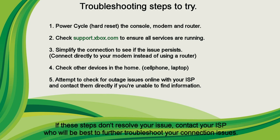Fourth, check other devices in the house — whether it be a cell phone, laptop, or other handheld device. If you're seeing a common issue with download speeds across all devices, you know there might be a problem with the connection. And fifth, attempt to check for outage issues with your internet provider — contact them directly if you need to. Sometimes they have the information available on their website; other times if you call in, they'll have an automated recording letting you know about any sort of issues.